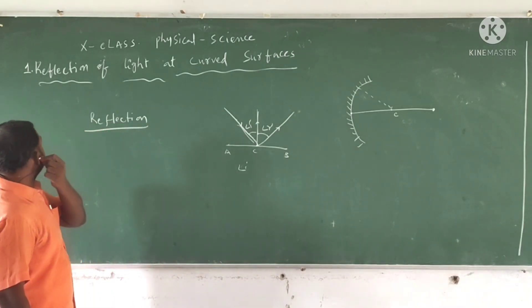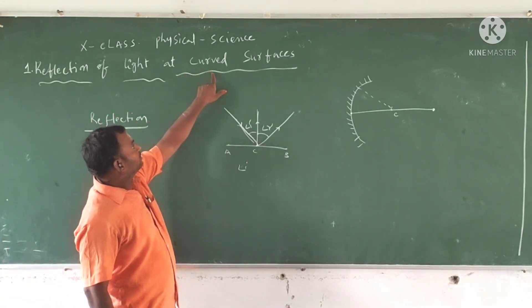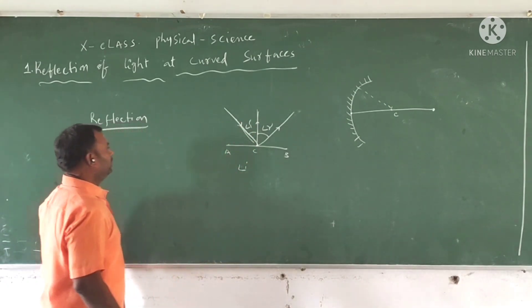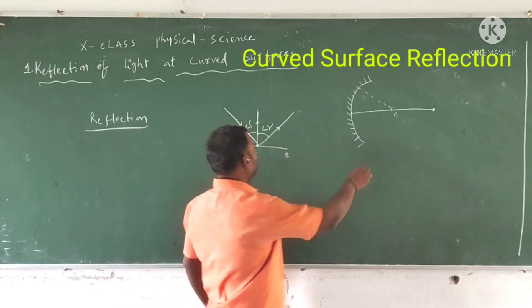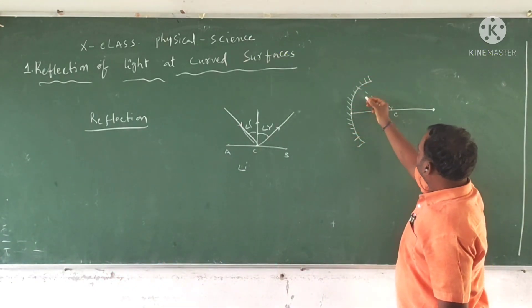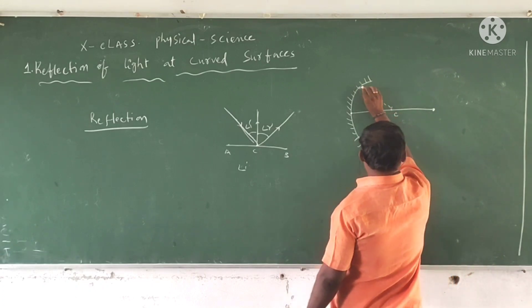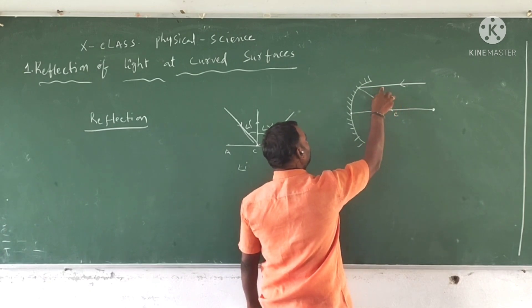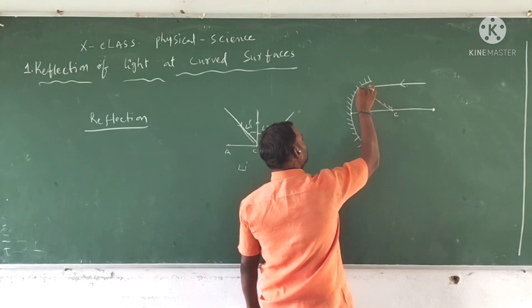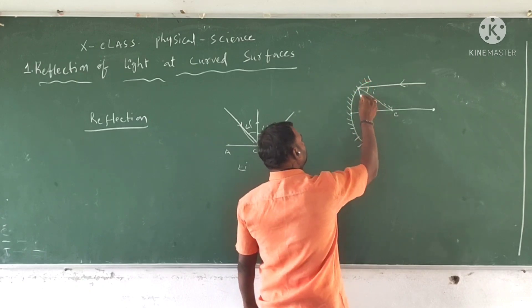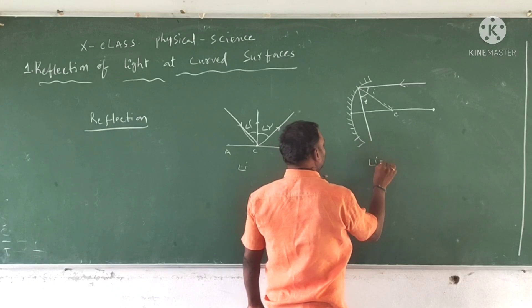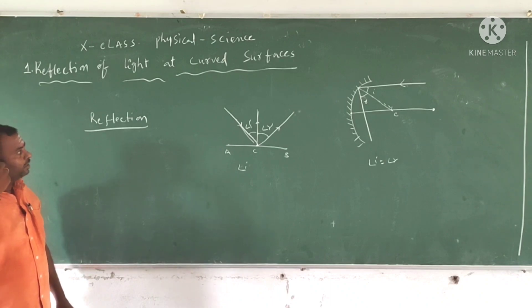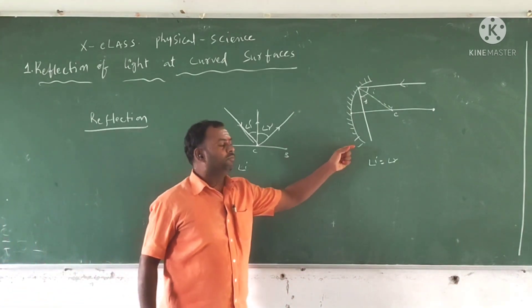In this lesson, we discussed light at curved surface and plane surface. This is the plane surface of reflection. Now, what is meant by curved surface? Suppose this is the curved surface. This is the incident ray, this is the normal ray. The angle between the normal and incident ray is angle I. This is the reflected ray, this is angle R. Angle I equals angle R in this case. So the angle of reflection is valid at both the plane surface and curved surface. The law of reflection is valid in plane surface and curved surface.